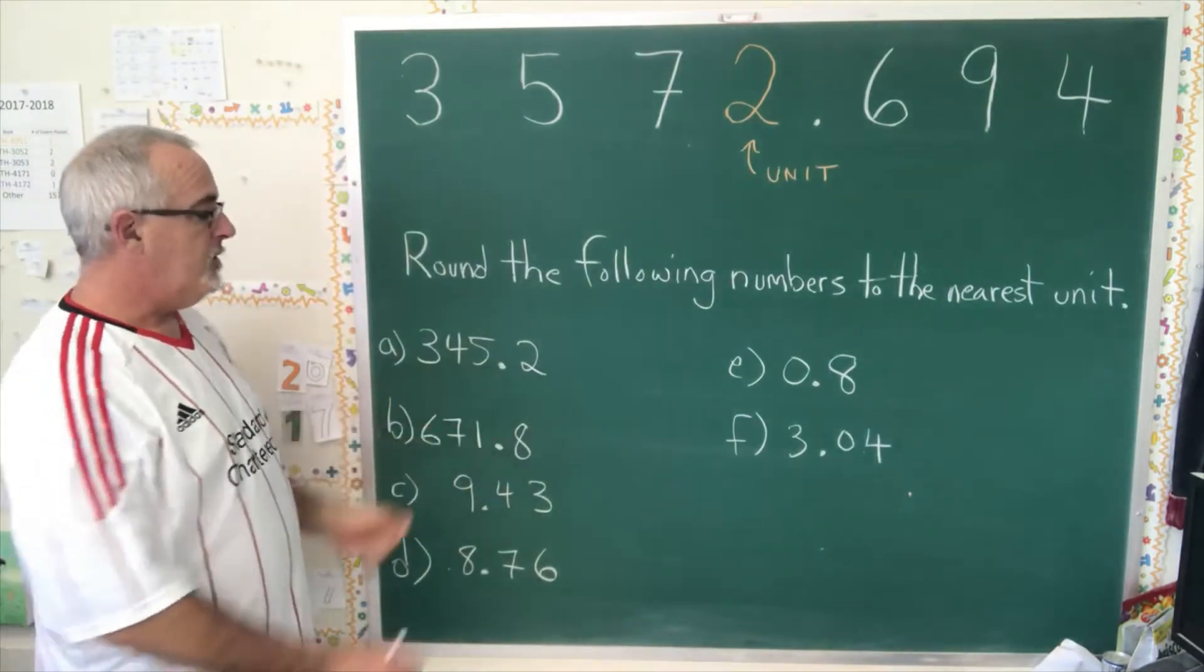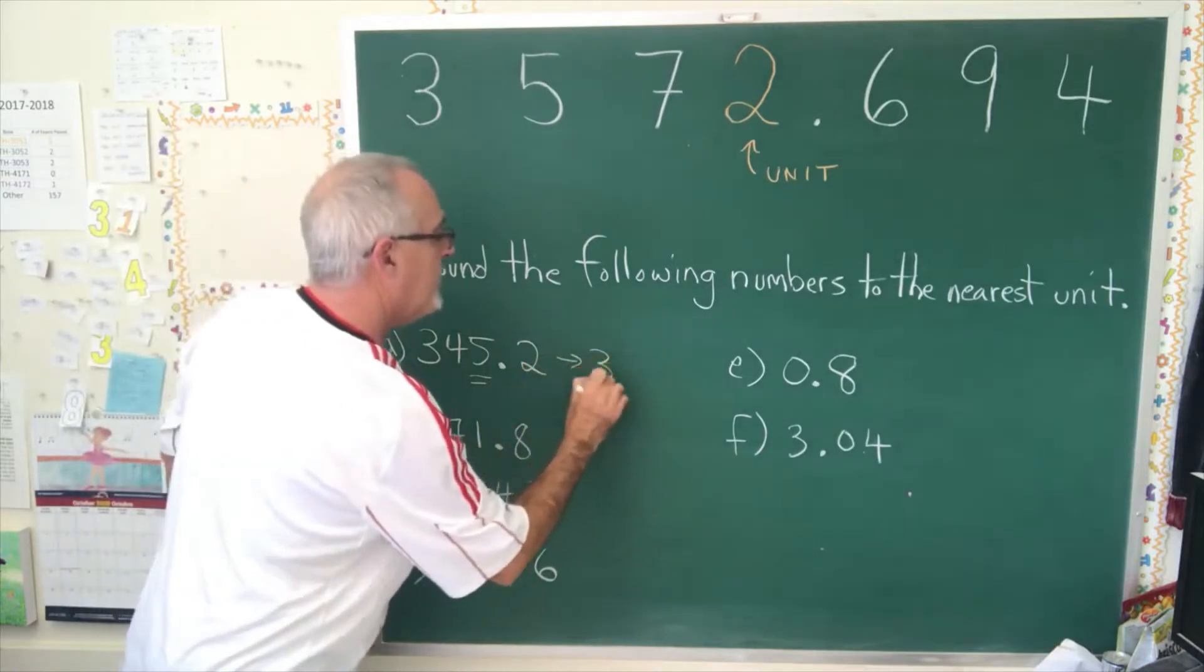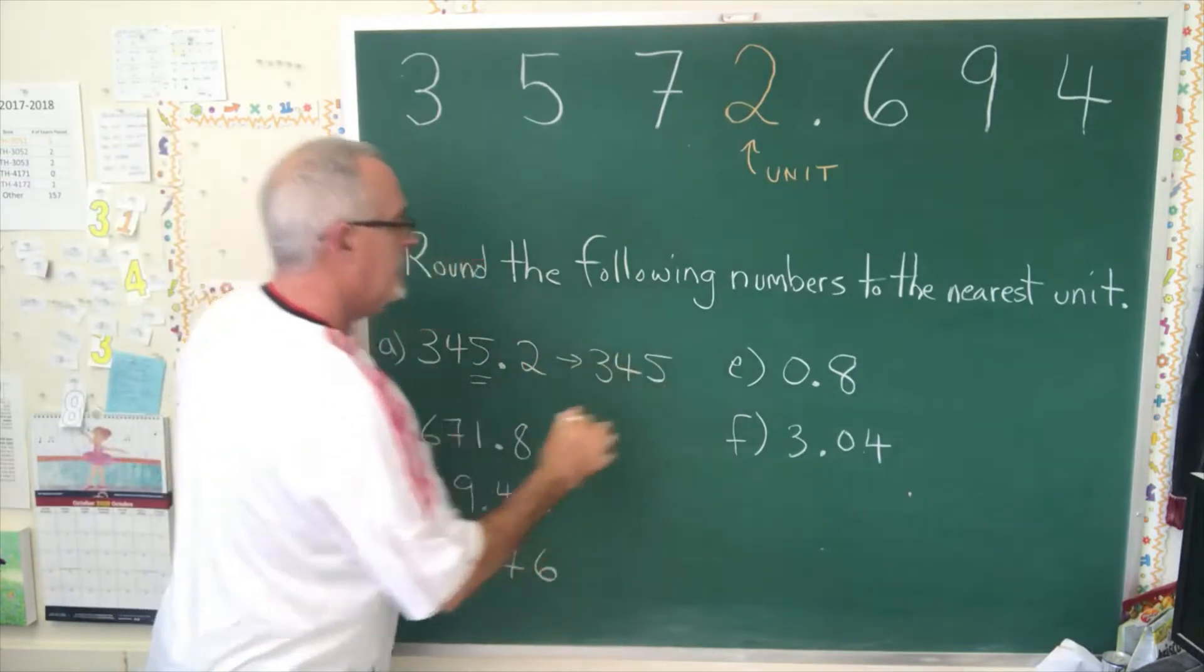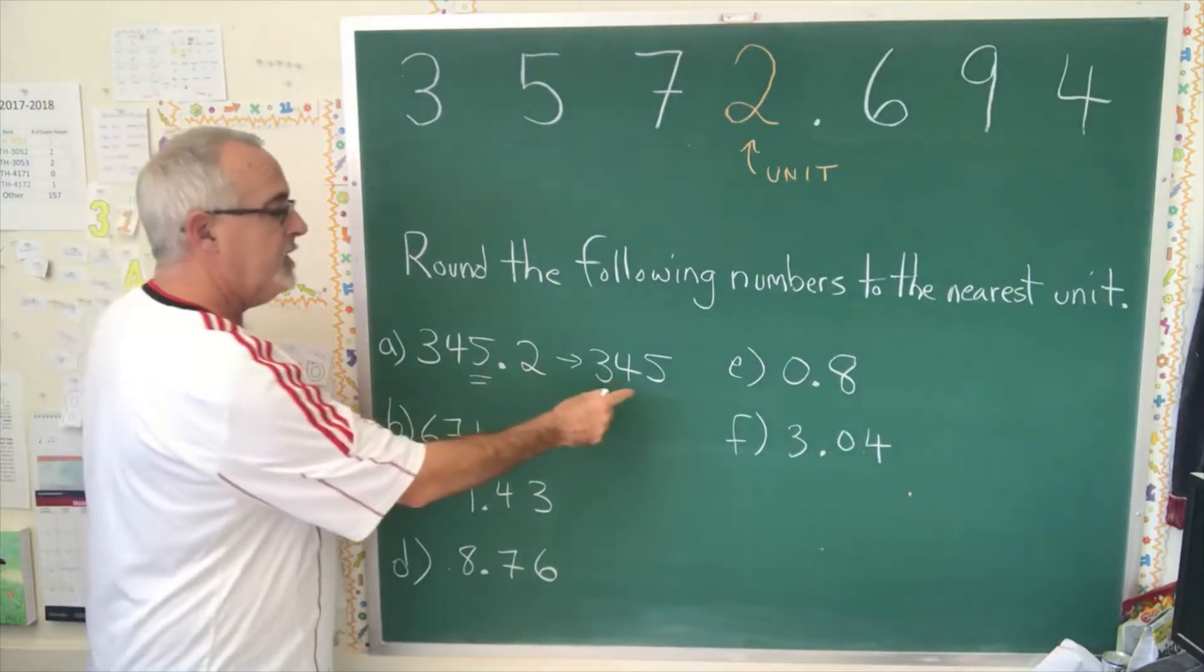345.2, the unit's position is here. So when I round it, I get 345. We get rid of the 0.2. Now we're showing this number to the nearest unit.